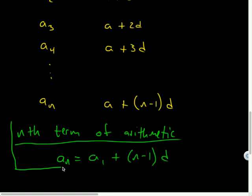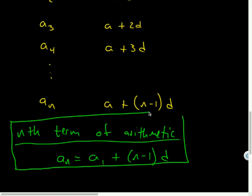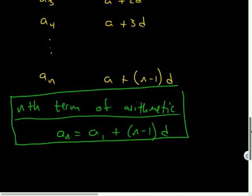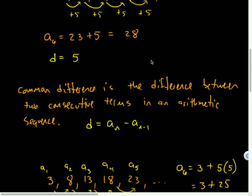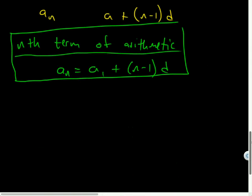So now we can, let's verify that this works. So if I wanted the sixth term here, according to that, a sub six should have equaled three plus, if n is six, so five times the common difference of five. So three plus 25 is 28. And isn't that what we got when we did it without a pattern? That is. So it appears as though that formula works. So that's going to be the first thing we'll be interested in is finding a particular term in a list.